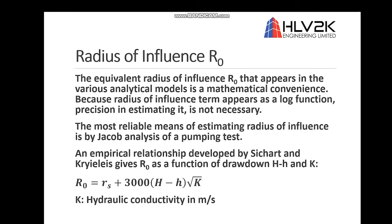We also need to estimate the radius of influence. The equivalent radius of influence that appears in the analytical models is a mathematical convenience. Because radius of influence terms appears as a log function, precise estimation is usually not necessary. The most reliable means of estimating radius of influence is by Jacob analysis of a pumping test. But if you don't have a pumping test, empirical relationships can be used.